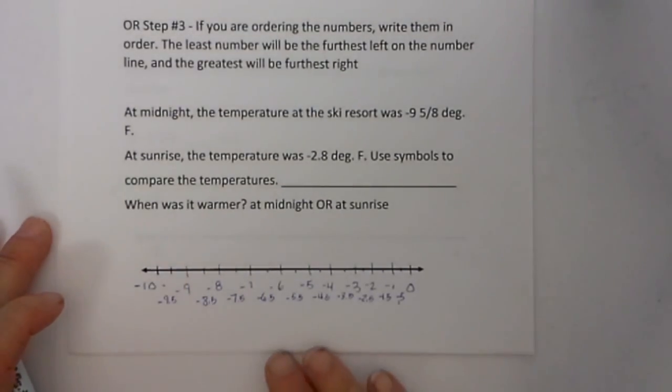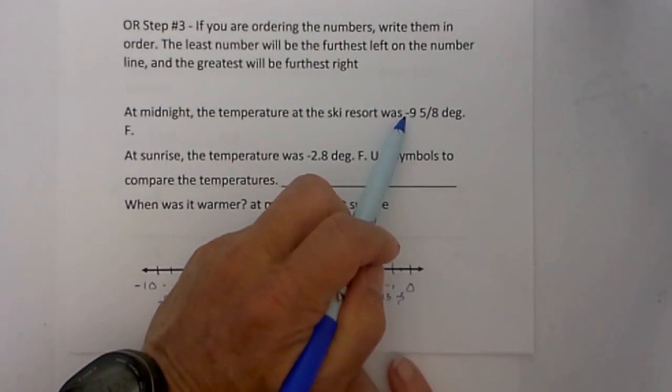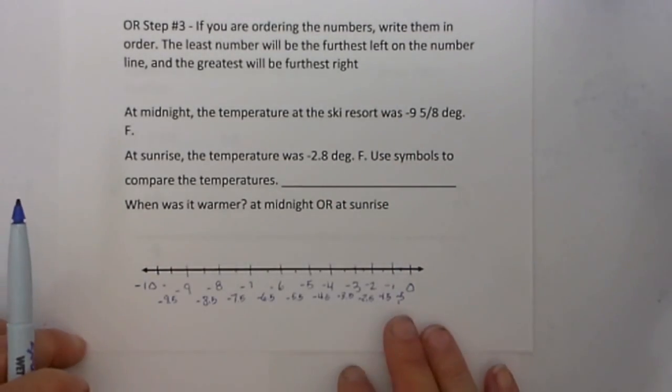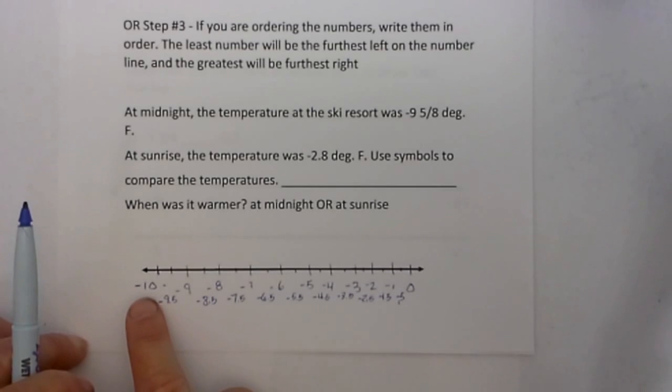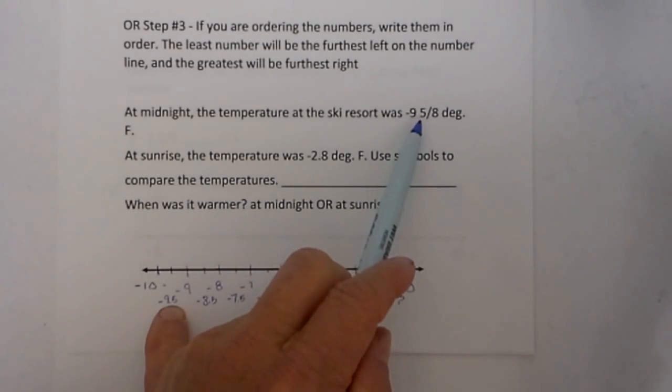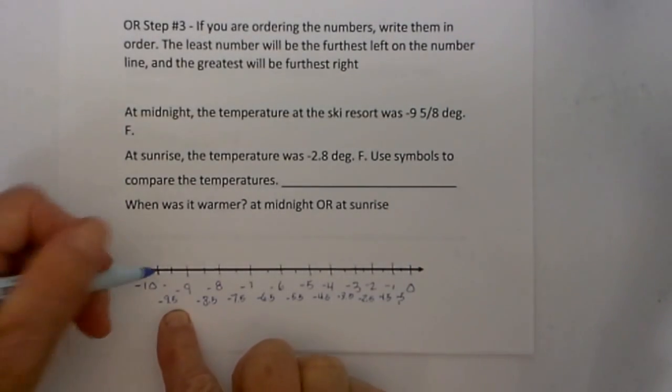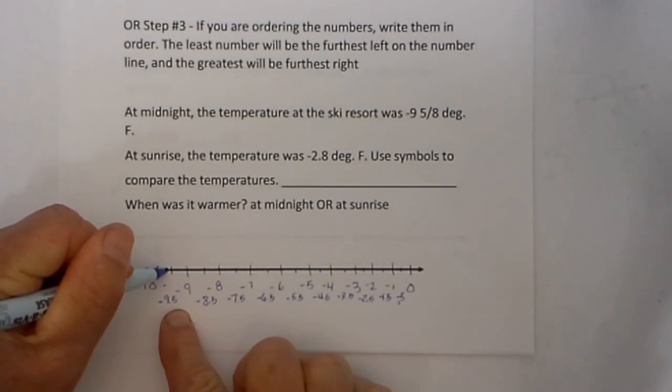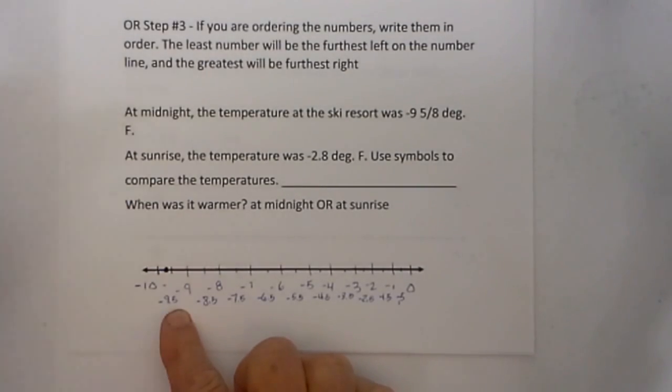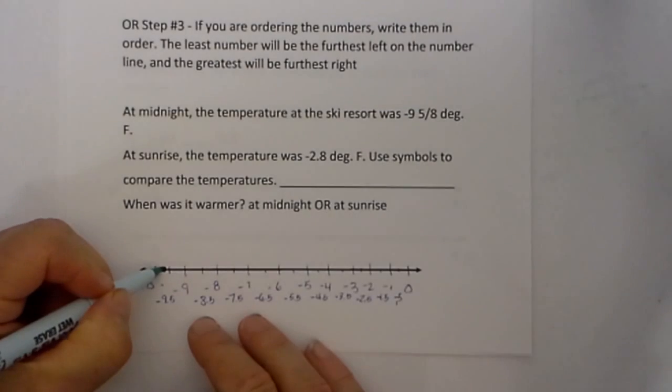The first thing we are going to do is plot the numbers. I will first plot negative 9 and 5 eighths. I have negative 10 on this side and 0 on this side. I have negative 9.5, which is halfway in between. And I know that negative 5 eighths is slightly larger than 9.5, because 4 eighths is 1 half. So I will plot negative 9 and 5 eighths here. Let's use a different color pen.